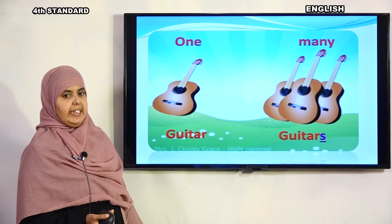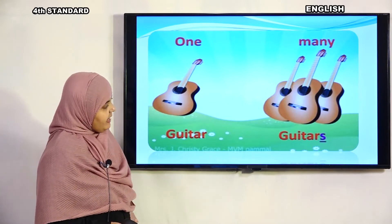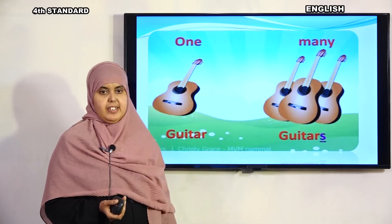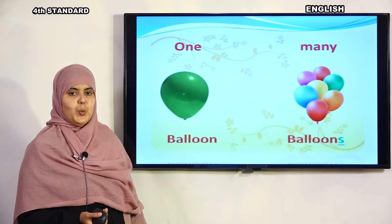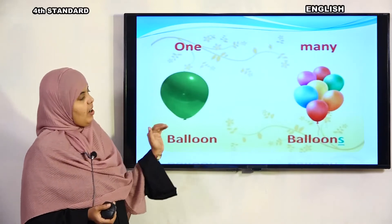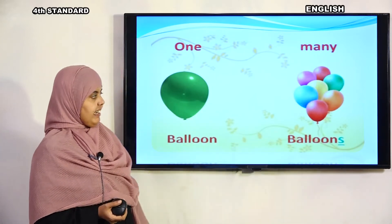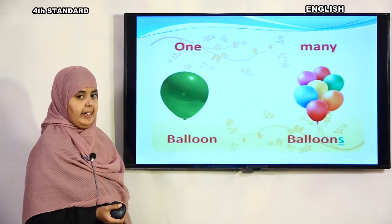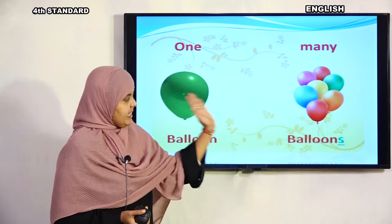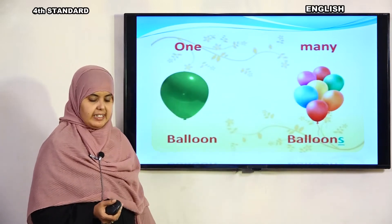One guitar — many guitars. We add 's' — so one guitar becomes guitars. One balloon — many balloons. When there is more than one, we add 's'. Balloon — B, A, double L, double O, N — plus 's' gives us balloons.